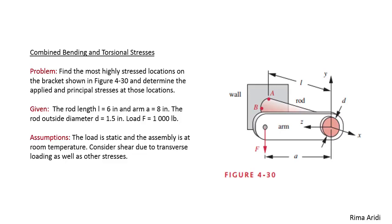Let's solve this problem on combined bending and torsional stresses. We have to find the highly stressed locations on the bracket and determine the applied and principal stresses at those locations. We will limit our study to the rod, which is loaded both in bending and torsion. We choose points A and B to be critical because they are on the wall where A has higher normal stress and B has higher shear stress. We'll find the stresses on both points and compare them.